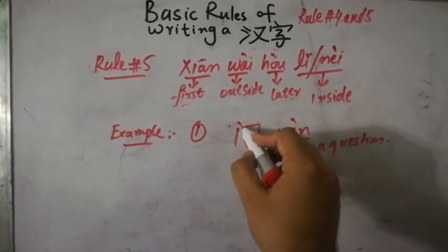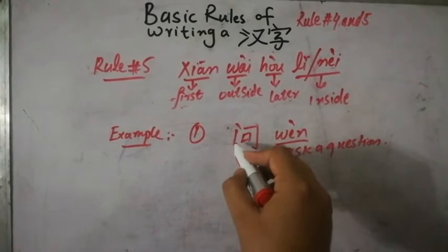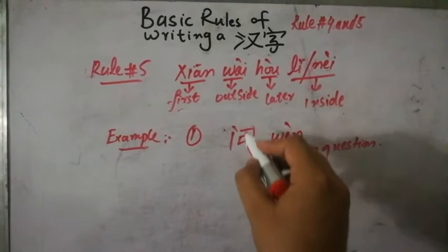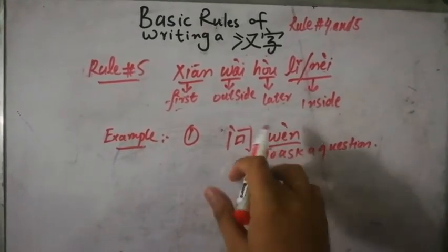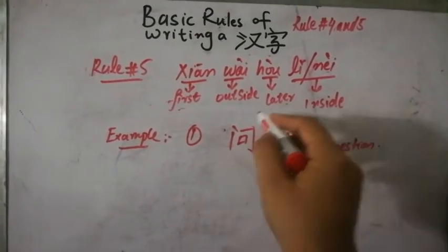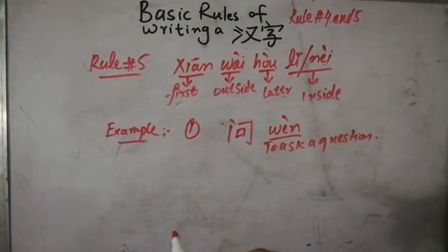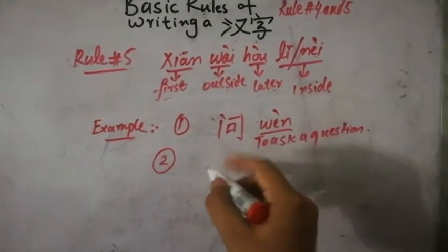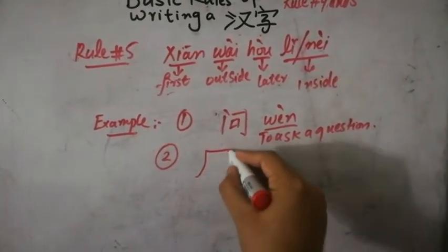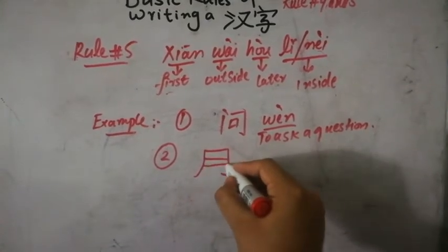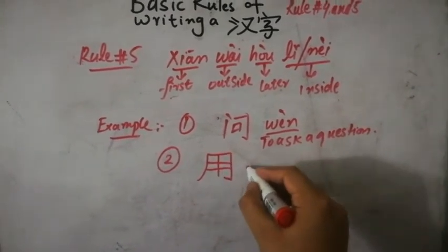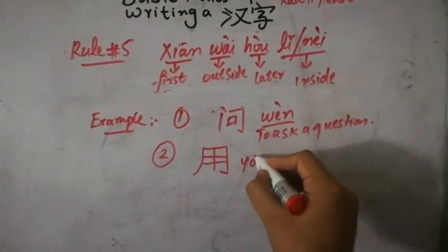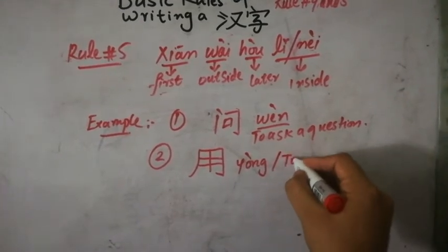A stroke and then we completed the inner side of the character. So another example could be 用 yòng, to use, to use something.